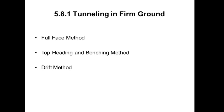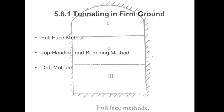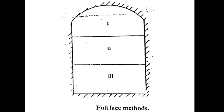Tunneling in firm ground. Methods used for tunneling in firm ground include the full face method, top heading and benching method, and drift method. In the full face method, the full face of the tunnel is excavated at a single time simultaneously.